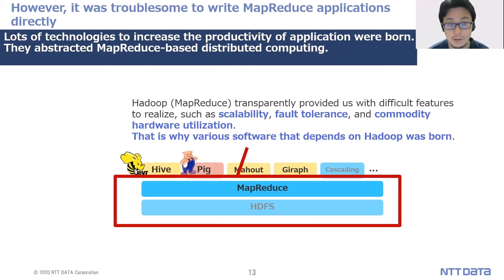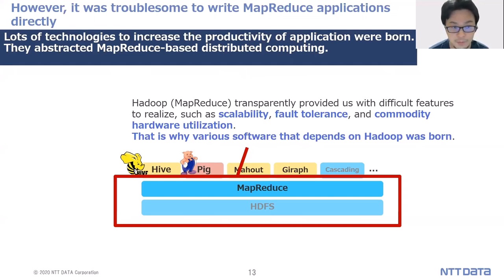However, it was troublesome to write MapReduce applications directly. So lots of technologies to increase the productivity of applications were born. They abstracted MapReduce-based distributed computing. In this approach, Hadoop MapReduce transparently provided difficult features to realize, such as scalability and commodity hardware utilization. This is why various software that depends on Hadoop was born.